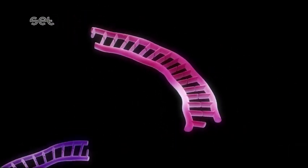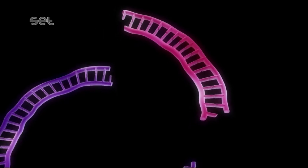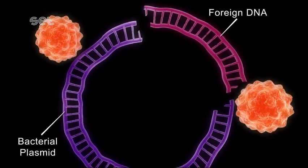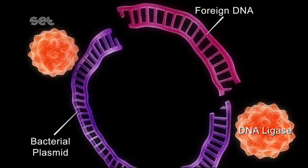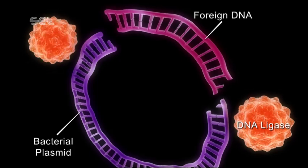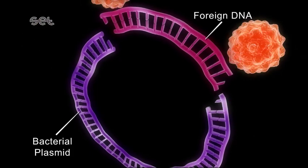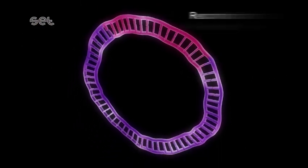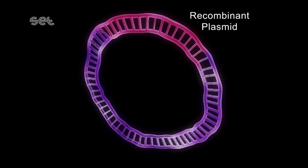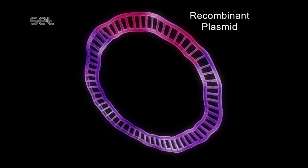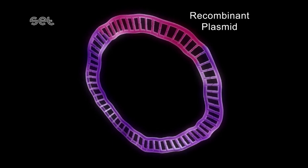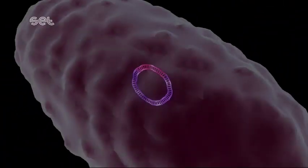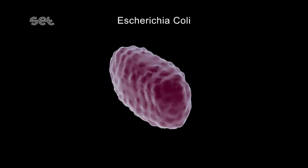This piece is attached to the previously cut bacterium plasmid by an enzyme with the help of DNA ligase, and thus a recombinant plasmid is produced. This recombinant plasmid, which now carries the insulin gene, is then transferred to Escherichia coli bacterium.